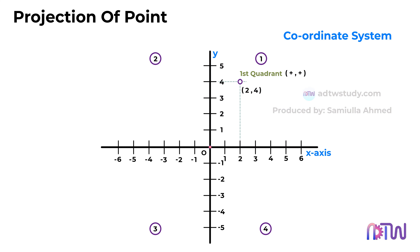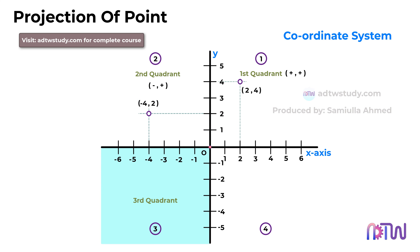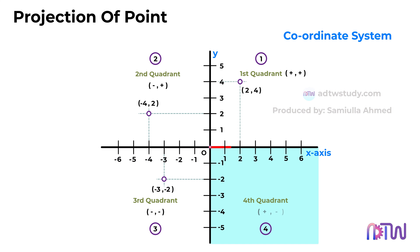Moving on, the second quadrant occupies the region between the negative x-axis and the positive y-axis. The third quadrant encompasses the area between the negative x-axis and negative y-axis, while the fourth quadrant spans the space between the positive x-axis and negative y-axis. Understanding these quadrants is fundamental in pinpointing the location of points within the coordinate system.